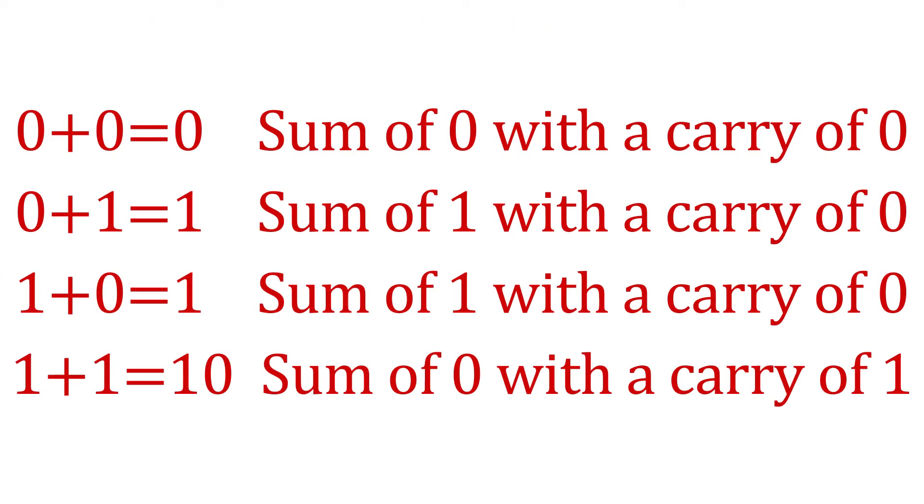In this video we're going to learn how to do arithmetic in binary. We're going to learn how to do addition, subtraction, multiplication and division. Starting with addition, there are four basic rules for binary addition: zero plus zero equals zero, this is a sum of zero with a carry of zero. Zero plus one equals one, sum of one with a carry of zero. One plus zero equals one, also a sum of one with a carry of zero. And finally, one plus one equals ten, this is a sum of zero with a carry of one.